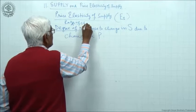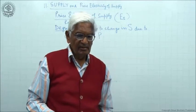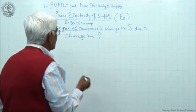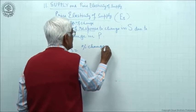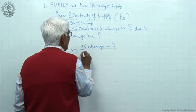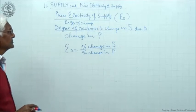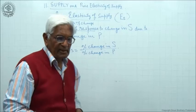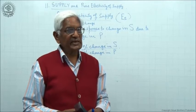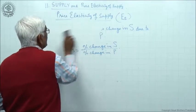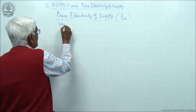Degree of response to change in supply due to change in price. Degree of response here means rate of change — as in case of demand, rate of change. The rate of change simply means percentage change in supply divided by percentage change in price. That is the meaning of price elasticity of supply.